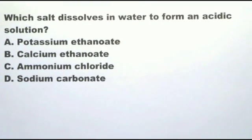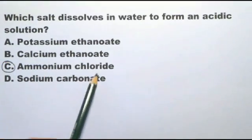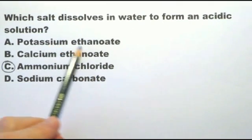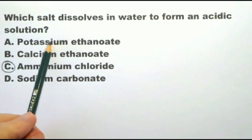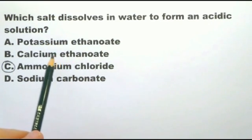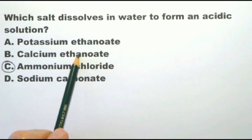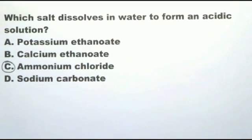Which salt dissolves in water? Form an acidic solution. You quickly look through that and you come to ammonium chloride, and you can say that immediately within 10 seconds, because ammonia is a weak base, hydrochloric acid is a strong acid. This one is an interesting one, it's potassium ethanoate, it's clearly going to be alkaline. Calcium ethanoate, it's going to be neutral because calcium hydroxide is a weak base and ethanoic acid is a weak base. Sodium carbonate is of course alkaline. The answer is ammonium chloride is going to form an acidic solution.